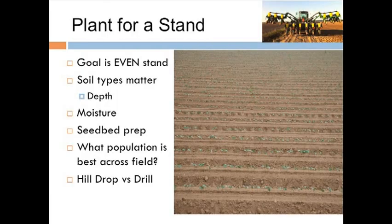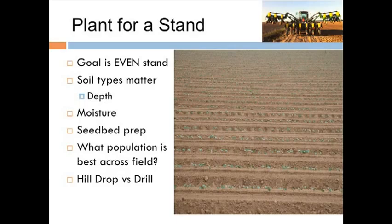We're planting less seed now, on average, than we ever have, partly because seed quality has greatly improved over the years. But the overall goal is an even stand — whatever we need to do in areas of the field to get that even stand is really what we're after. Soil moisture matters, as does depth, type of soil, and how we prepare that seed bed. The question is: how do we know what population is best in a given scenario? That's what we focused on in this study.